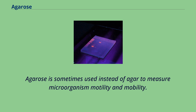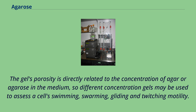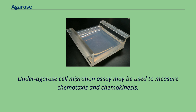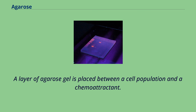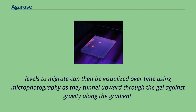Agarose is sometimes used instead of agar to measure microorganism motility and mobility. Motile species will be able to migrate, albeit slowly, throughout the porous gel and infiltration rates can then be visualized. The gel's porosity is directly related to the concentration of agar or agarose in the medium, so different concentration gels may be used to assess a cell's swimming, swarming, gliding and twitching motility. An under-agarose cell migration assay may be used to measure chemotaxis and chemokinesis. A layer of agarose gel is placed between a cell population and a chemoattractant. As a concentration gradient develops from the diffusion of the chemoattractant into the gel, various cell populations requiring different stimulation levels to migrate can then be visualized over time using microphotography as they tunnel upward through the gel against gravity along the gradient.